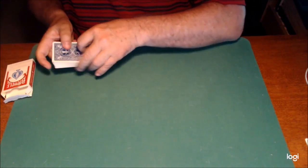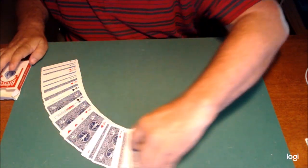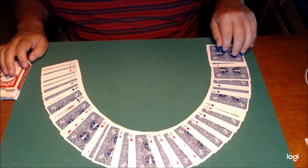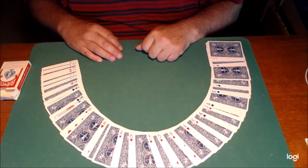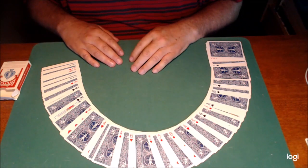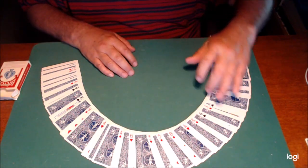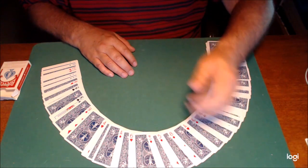And then what I'd like you to do is look at the face of cards, and you can choose any one of those face-up cards that you like. It doesn't really matter, it's a totally free choice: the King of Clubs or the Queen of Diamonds or the Eight of Diamonds.